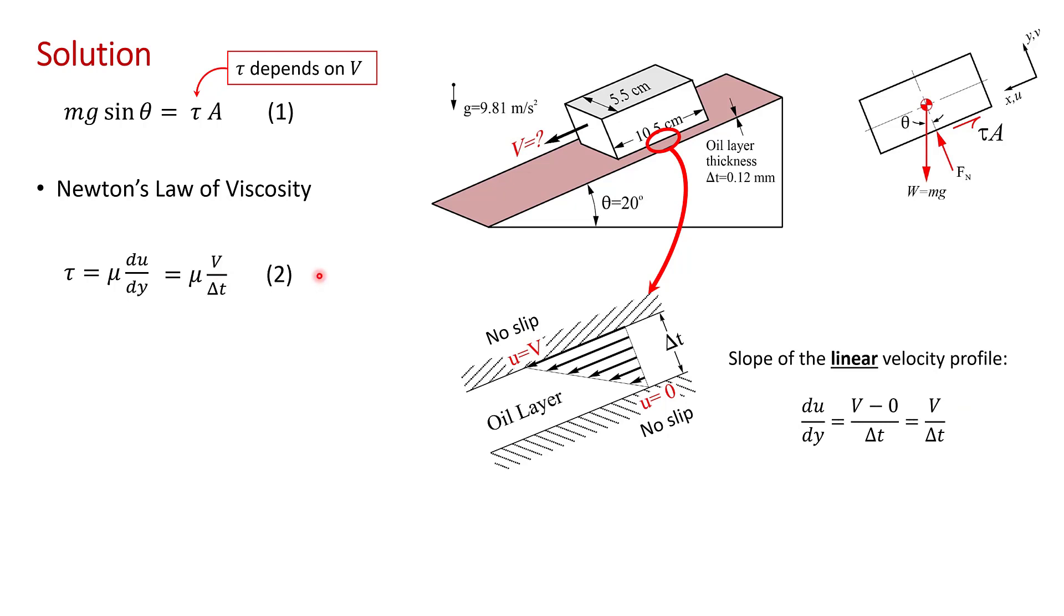We can make the substitution over here for du dy. I'll call that equation two. So tau equals mu V over delta t. Now we can substitute equation two into equation one, and we get mg sine theta equals the dynamic viscosity V over delta t times A. Now we can solve for the unknown velocity V.